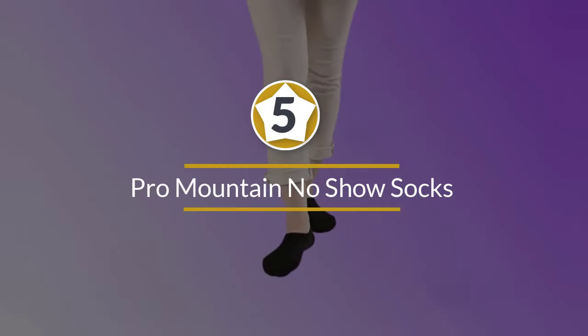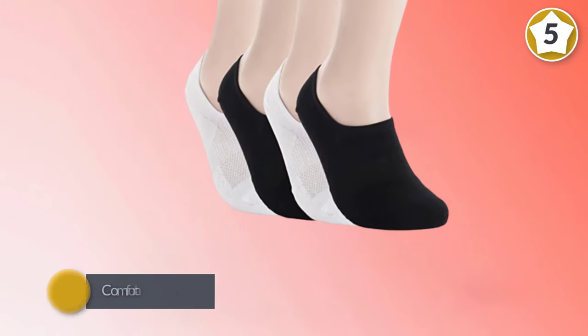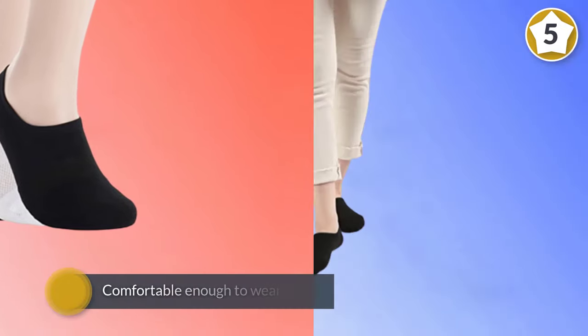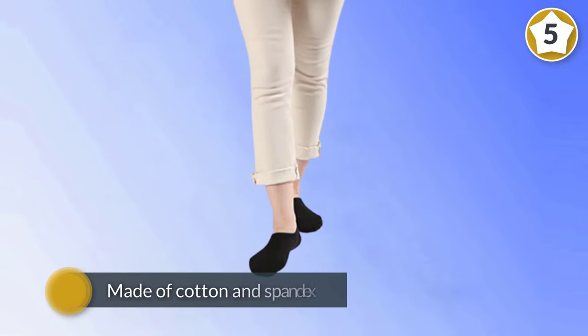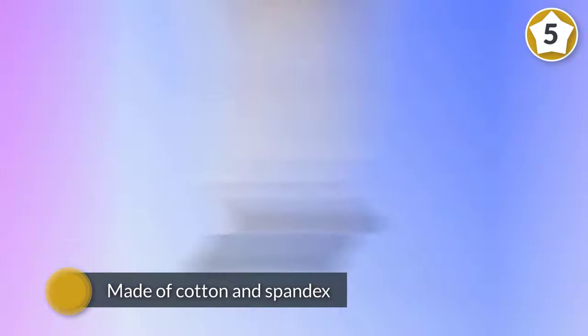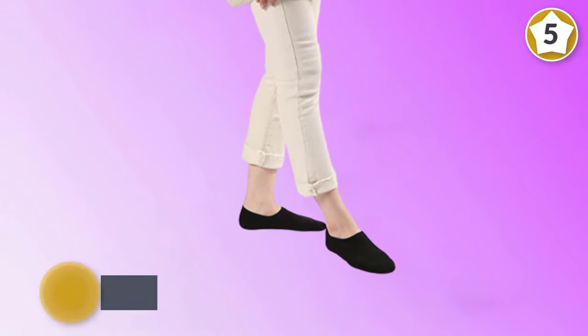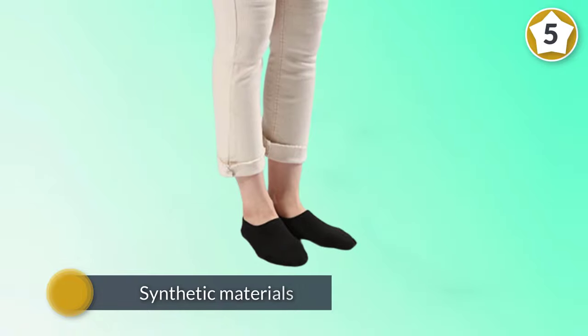Number five: Pro Mountain No-Show Socks. If you're looking for no-show socks that really don't show, are comfortable enough to wear all day and don't slip off, then Pro Mountain socks are just what you need. Mainly made of cotton and spandex, they eliminate the friction and irritation caused by synthetic materials. On the instep is a mesh structure that's used to make this item more breathable and lighter.